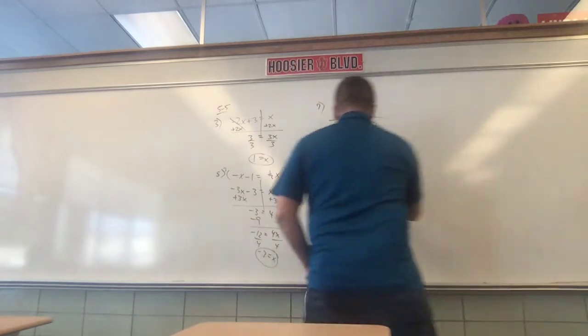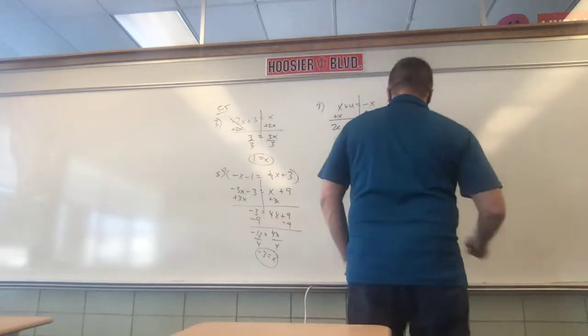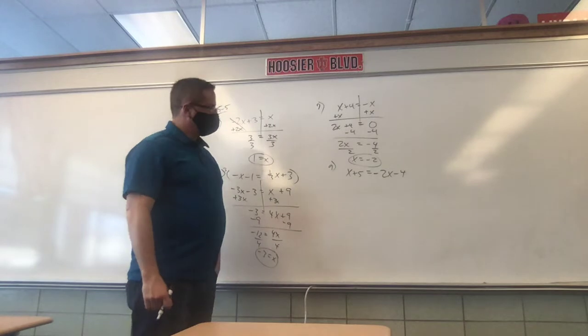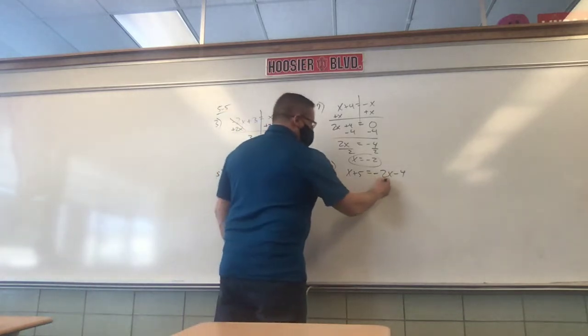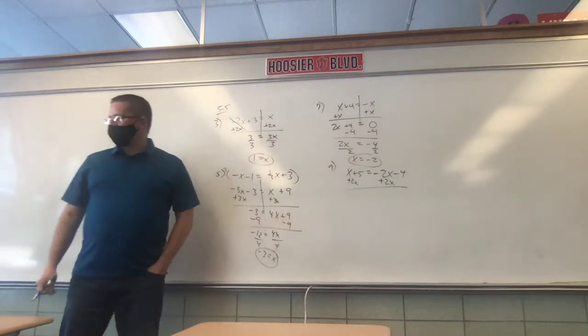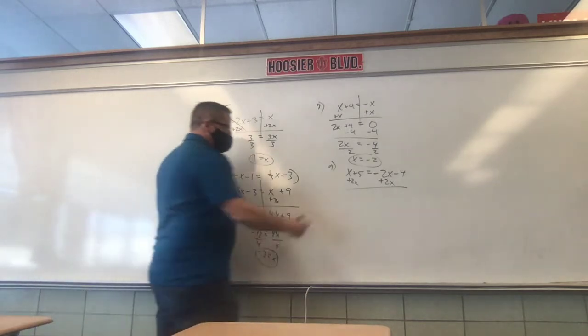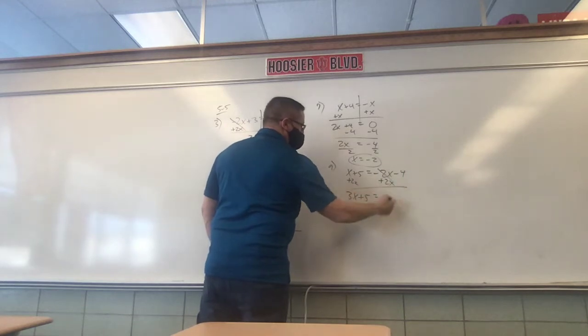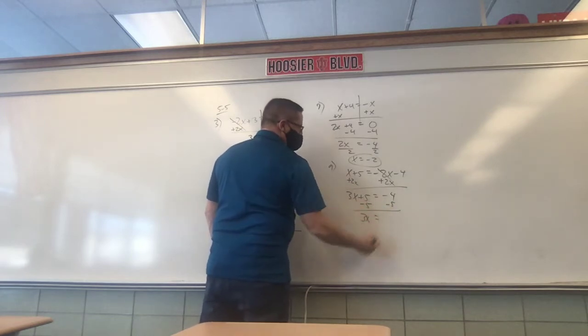You should have done a couple of problems — I just want to make sure because some students still struggle with this. x plus 5 equals negative 2x minus 4. So what are we going to do here? Which x are we going to get rid of? Negative 2x — because it's smaller. So we add 2x. 3x plus 5 equals negative 4. Minus 5 to each side. 3x is negative 4 minus 5, which is negative 9.